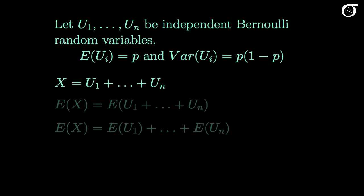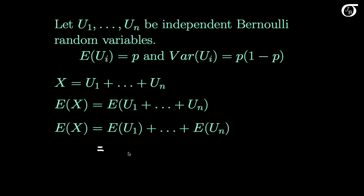Then our binomial random variable x is the sum of these n random variables, and the expectation of x is the expectation of the sum of the n Bernoulli random variables. Using properties of expectation, this is simply the sum of the expectations. But each one of these has an expectation of p, and so we are simply adding up p n times, and this is equal to n times p. So the mean of our random variable x is n times p.